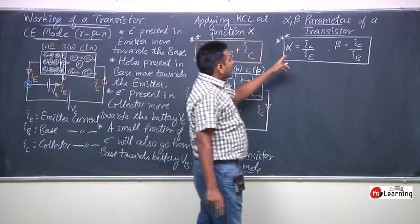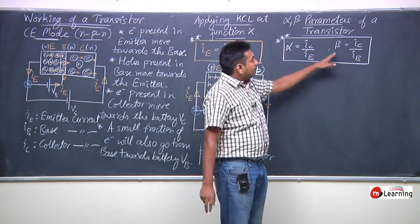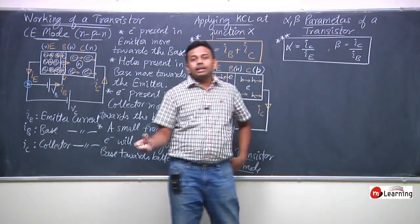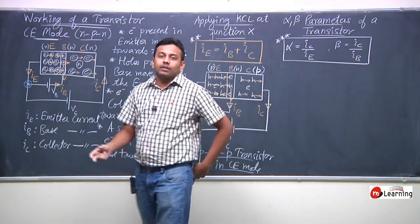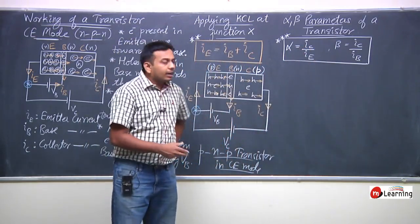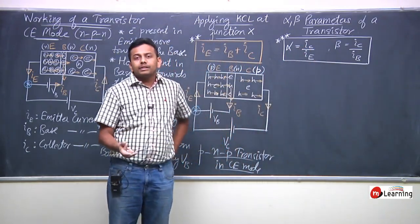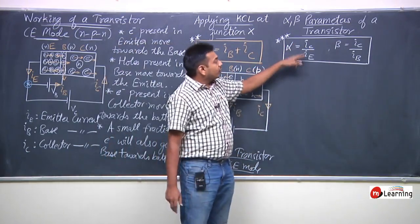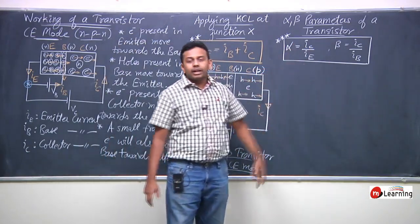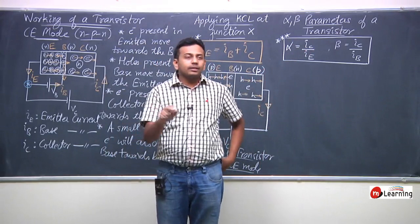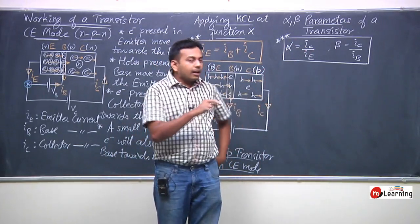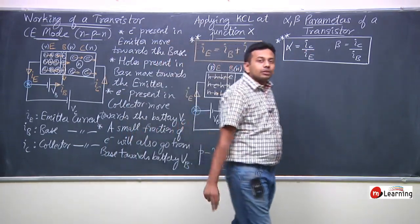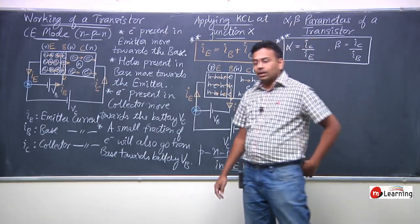That is why we can always define the Alpha-Beta parameters of a transistor. Alpha is always constant — the ratio IC upon IE remains almost constant. Similarly, Beta, which is IC upon IB, remains almost constant.